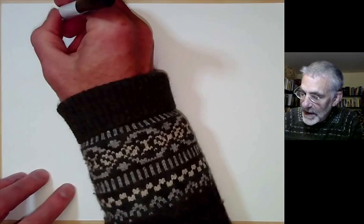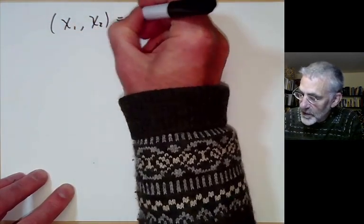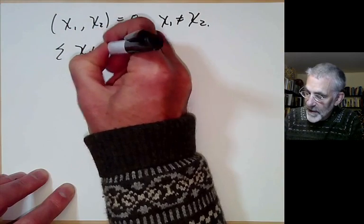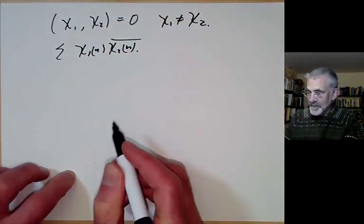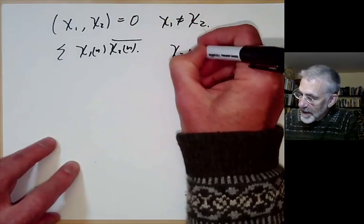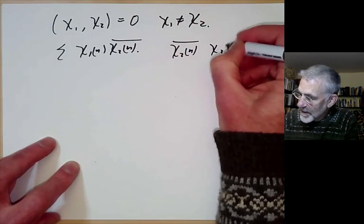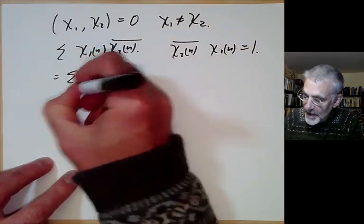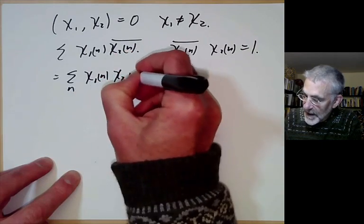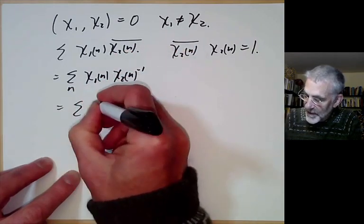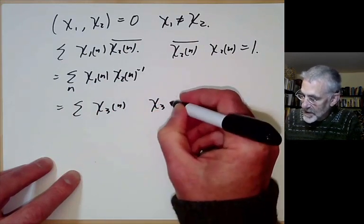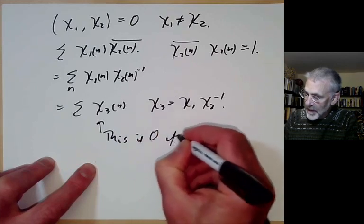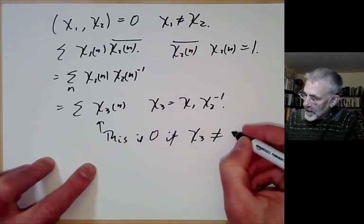We want to show any two distinct characters chi1 and chi2 are orthogonal. The inner product is the sum of chi1 of n times the conjugate of chi2 of n. Since chi2 of n is a root of unity with absolute value 1, its conjugate equals its inverse, so this becomes the sum of chi1 of n times chi2 of n to the minus 1, which is the sum of chi3 of n where chi3 equals chi1 chi2 to the minus 1. We need to show this sum is zero when chi3 is not the unit character.